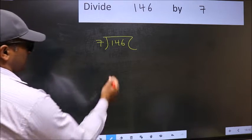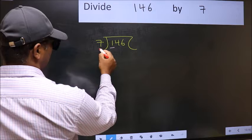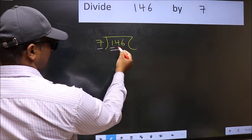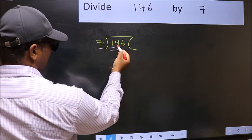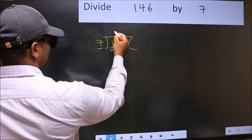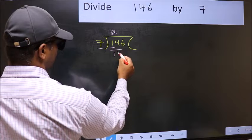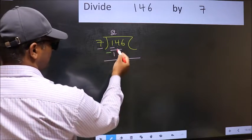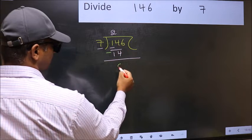Here we have 1 and here 7. 1 is smaller than 7, so take 2 numbers: 14. When do we get 14 in the 7 table? 7 twos are 14. Now you should subtract. 14 minus 14 equals 0.